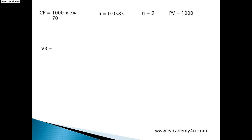Value of bond equals to 70. And then we open the bracket 1 minus 1 over 1 plus which was i 0.0585 power to 9 over 0.0585. And then we close the bracket and then present value is 1000. Open the bracket 1 over 1 plus i 0.0585 power to 9. And then we close the bracket and now we just have to solve all this.